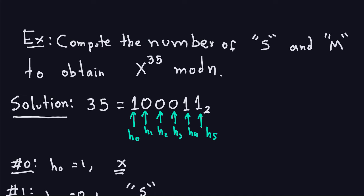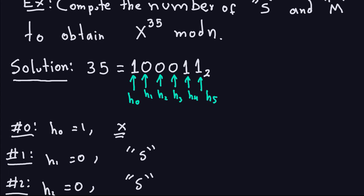Let's look at this example. We are going to compute the number of multiplications and squarings to obtain x to the 35 modulo n. Remember, you always take the exponent and get its binary representation. The binary representation of 35 is a sequence of ones and zeros. You denote the first one as h0, the next as h1, and so on. We start with the algorithm: when you get the first one h0, that is always going to be equal to 1, and you just write down the base, which is x.